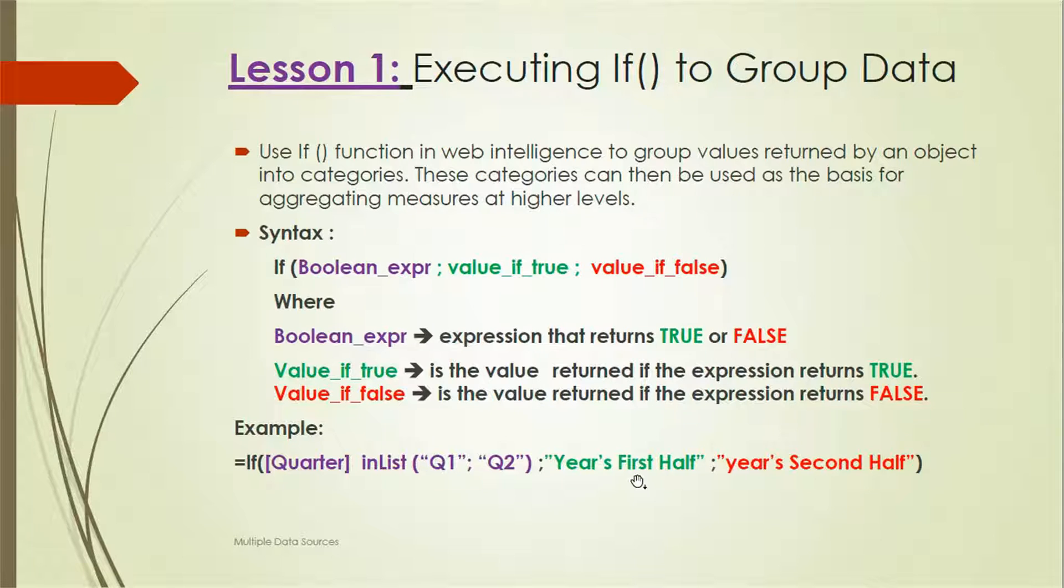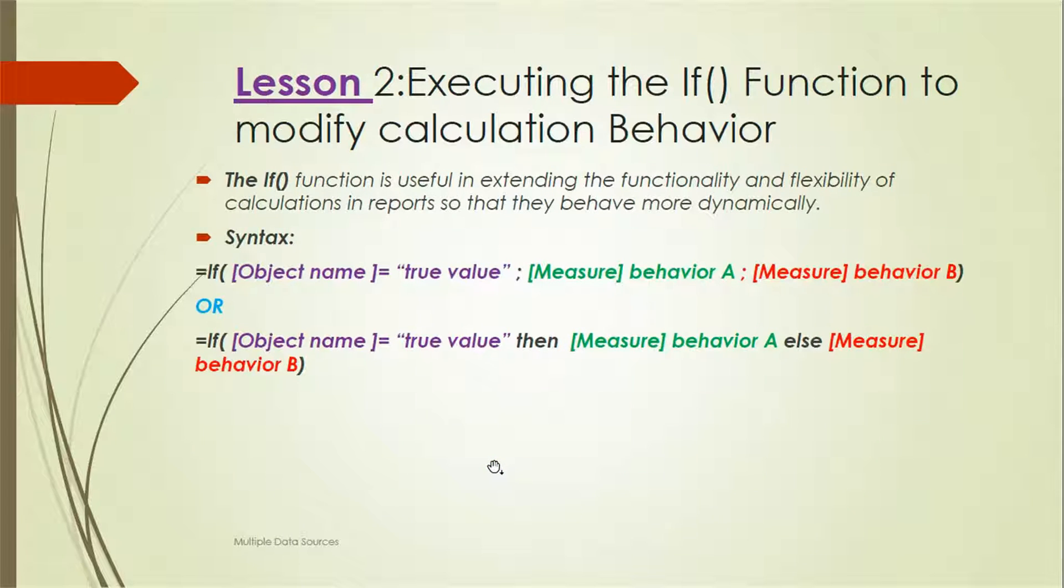Now, executing the If function to modify calculation behavior. We need to understand how calculation behavior can be changed using the If function. This function is useful in extending the functionality and flexibility of calculations in the report so that they behave more dynamically. We can change values dynamically based on If conditions. For example, if an object name equals a true value, then we can specify the behavior of that particular measure, or else use a different measure behavior.